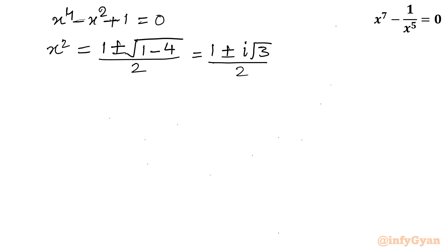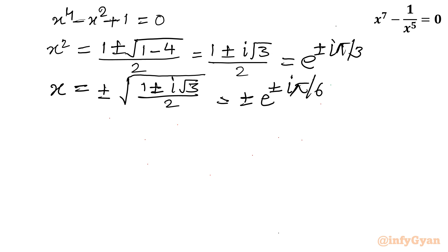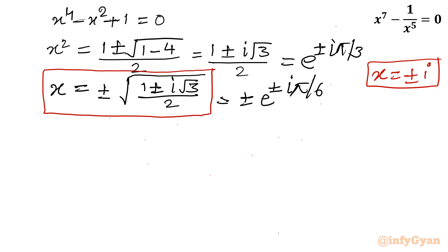In exponential form, x square can be written as e raised to the power plus minus i pi by 3. Taking square roots on both sides, x equals plus minus e power plus minus i pi over 6. So we have 4 solutions from this bracket. Combined with the earlier 2 complex solutions plus minus i, we have a total of 6 complex solutions so far.